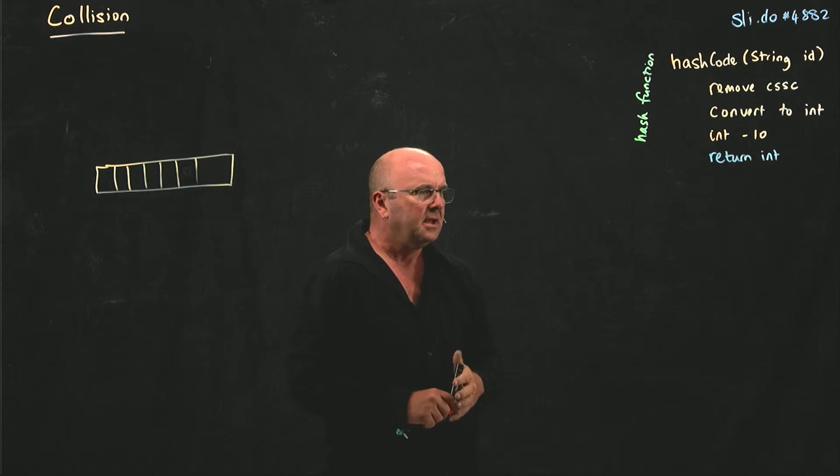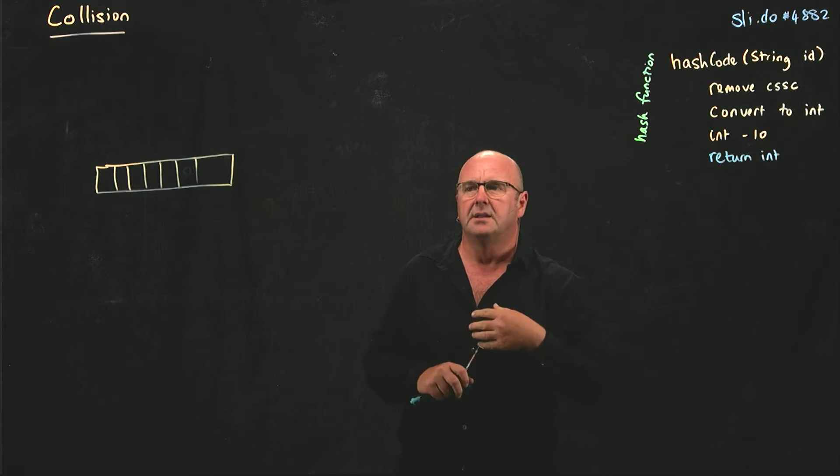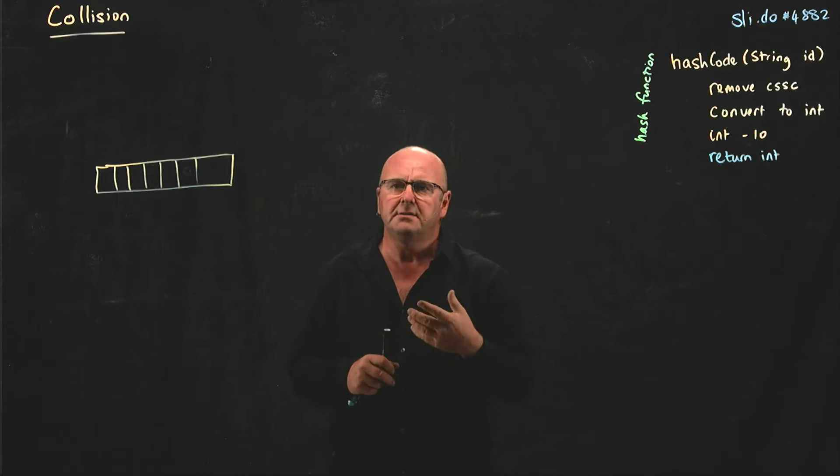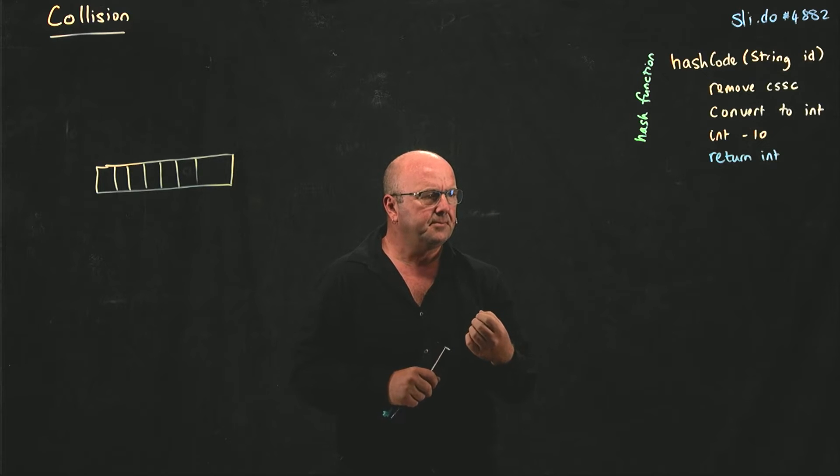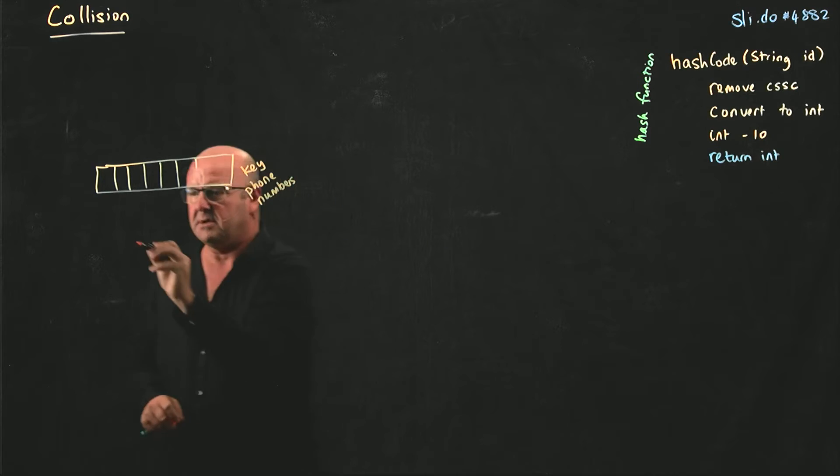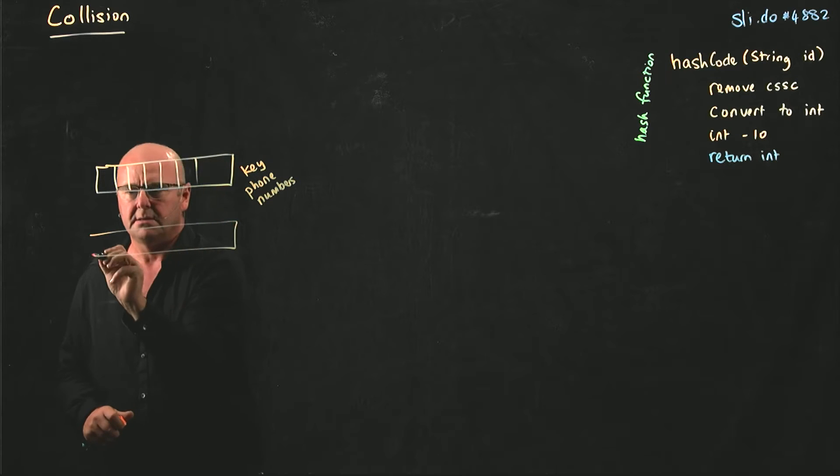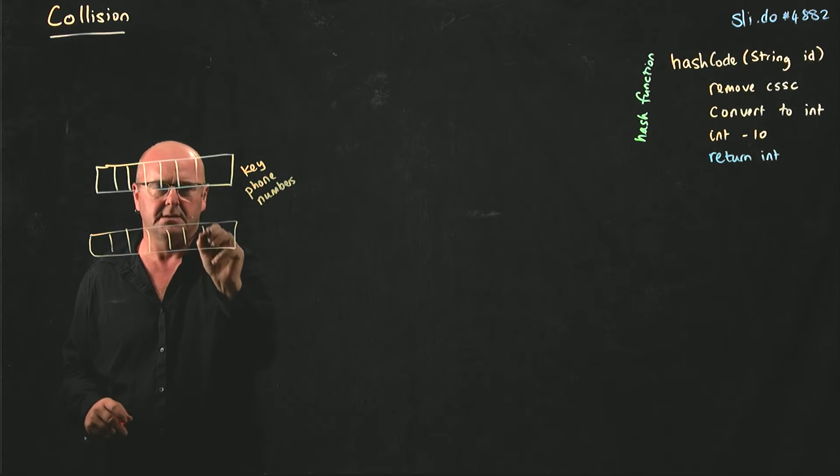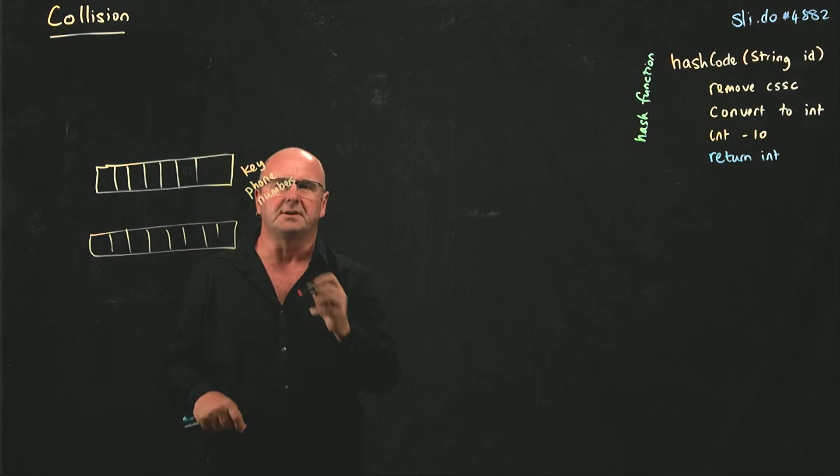It's only a small array. And I'm going to use phone numbers as my key. My value could be people associated with phone numbers.